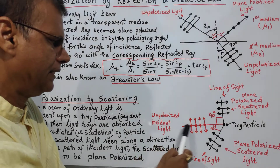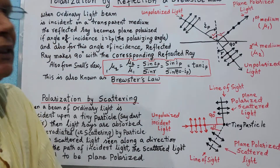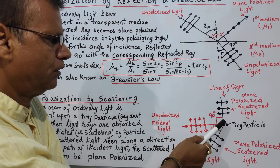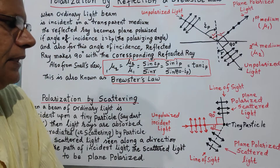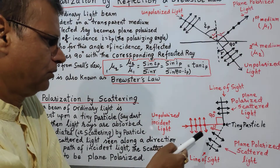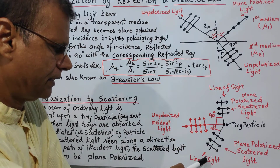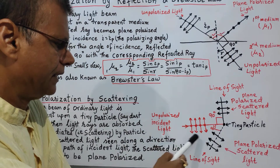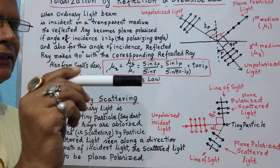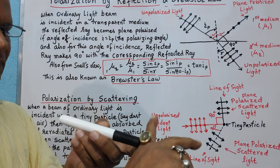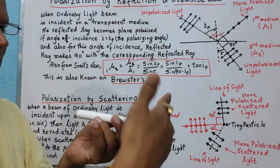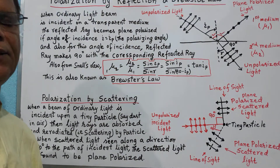If we consider an ordinary light ray incident on a small particle in air, the scattered light when seen at a direction 90 degrees to the direction of incident light is found to be plane polarized. This can happen in any direction as long as the line of sight is at 90 degrees to the original path of the incident light — that is, in the plane perpendicular to the incident direction. In whatever direction we look within that plane, we will find the scattered light to be plane polarized.